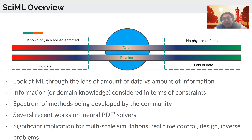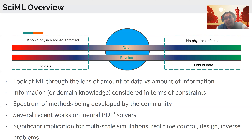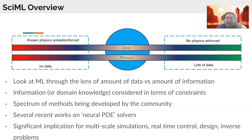Scientific machine learning looks at this complete spectrum of methods. People have designed methods that work on the far right — no notion of physics, lots of data — and trained machine learning models for that. More recently, people have been thinking about what happens if you have some data but also some domain knowledge. How do you integrate domain knowledge, perhaps in terms of constraints? These constraints could be measurements, incompressibility constraints if you're doing fluid mechanics, rules of thumb, or equation of state if you're doing thermodynamics.